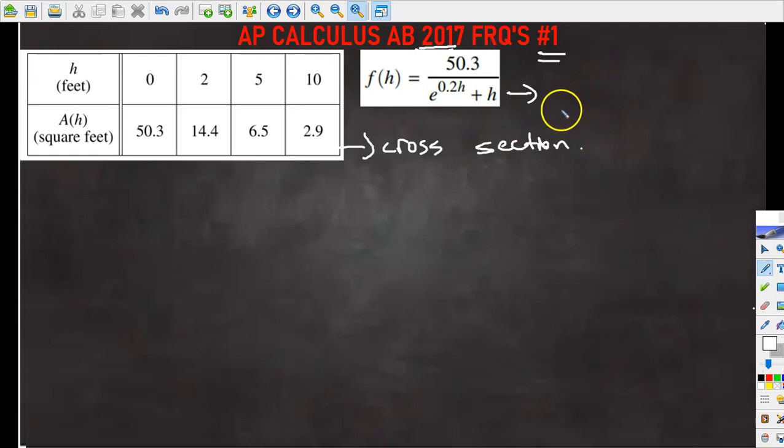In the first problem it says use the left Riemann sum with the three subintervals indicated by the data in the table and approximate the volume of the tank.